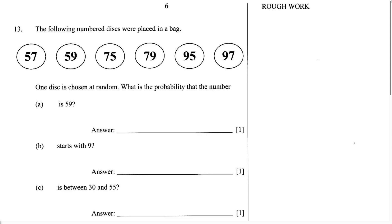In this video, we're going to do a question on probability. I like to think of probability as the game of chance — nothing is certain. The question says the following numbered discs were placed in a bag: 57, 59, 75, 79, 95, and 97. Then it goes on to say one disc is chosen at random. What is the probability that the number for part A is 59?